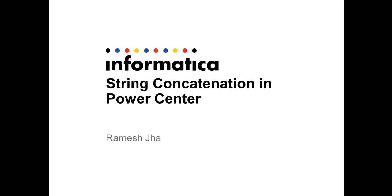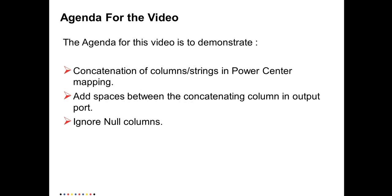Hi, this is Ramesh from Informatica Support. This video is a demo on how you can do string concatenation in PowerCenter. I'll be talking mainly about three things: first, the concatenation of columns and strings in a PowerCenter mapping; second, how you can add spaces between the concatenating columns for the final output; and third, if there are null values in your input columns, how you can identify and ignore them from getting concatenated in your final output.